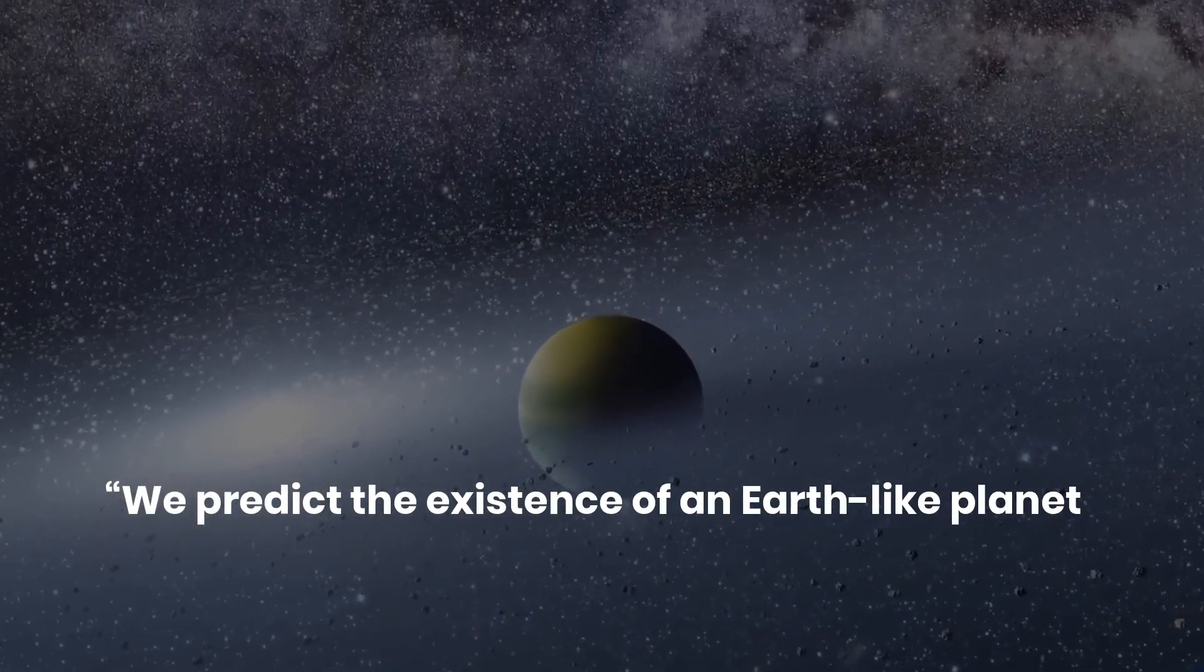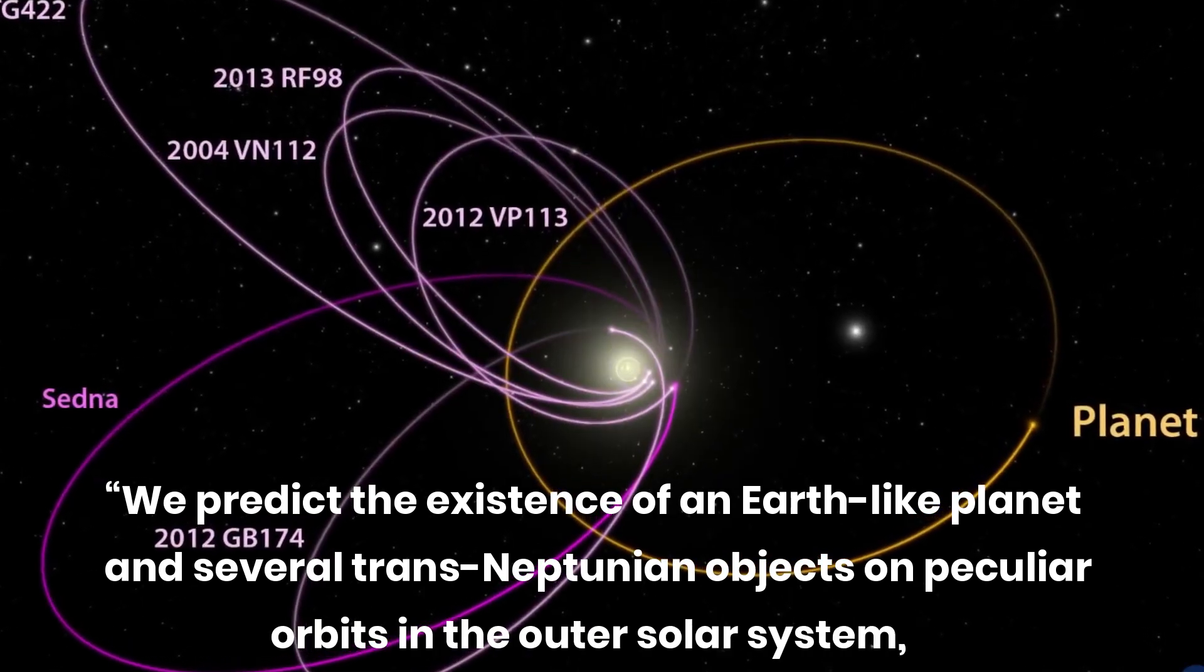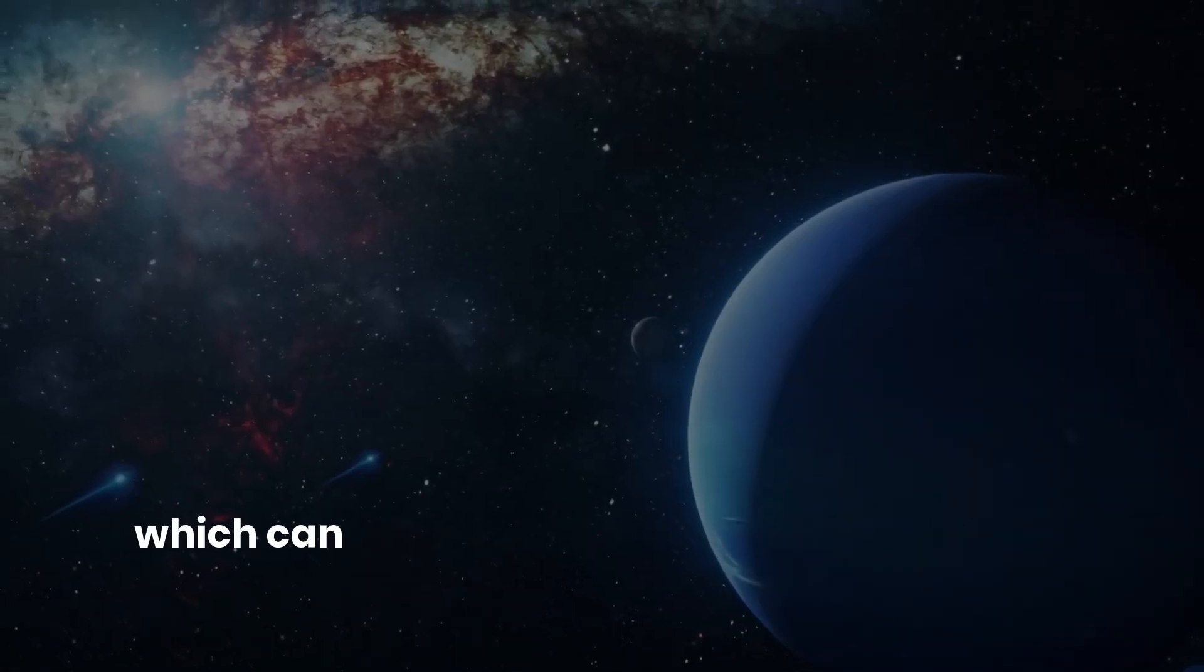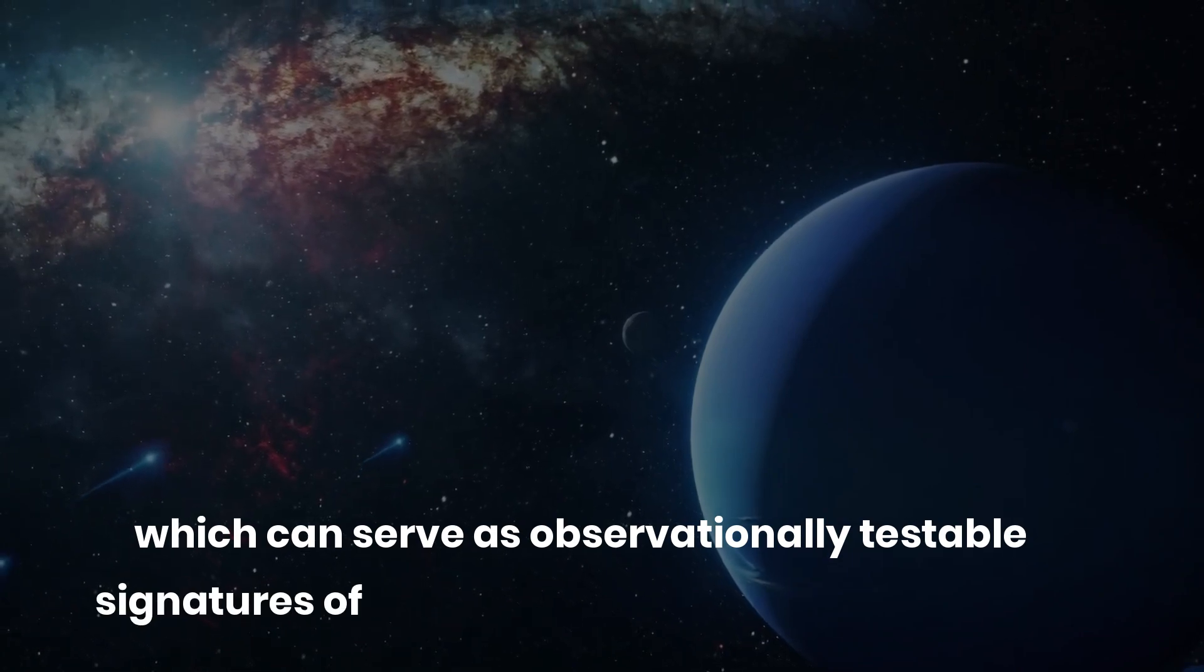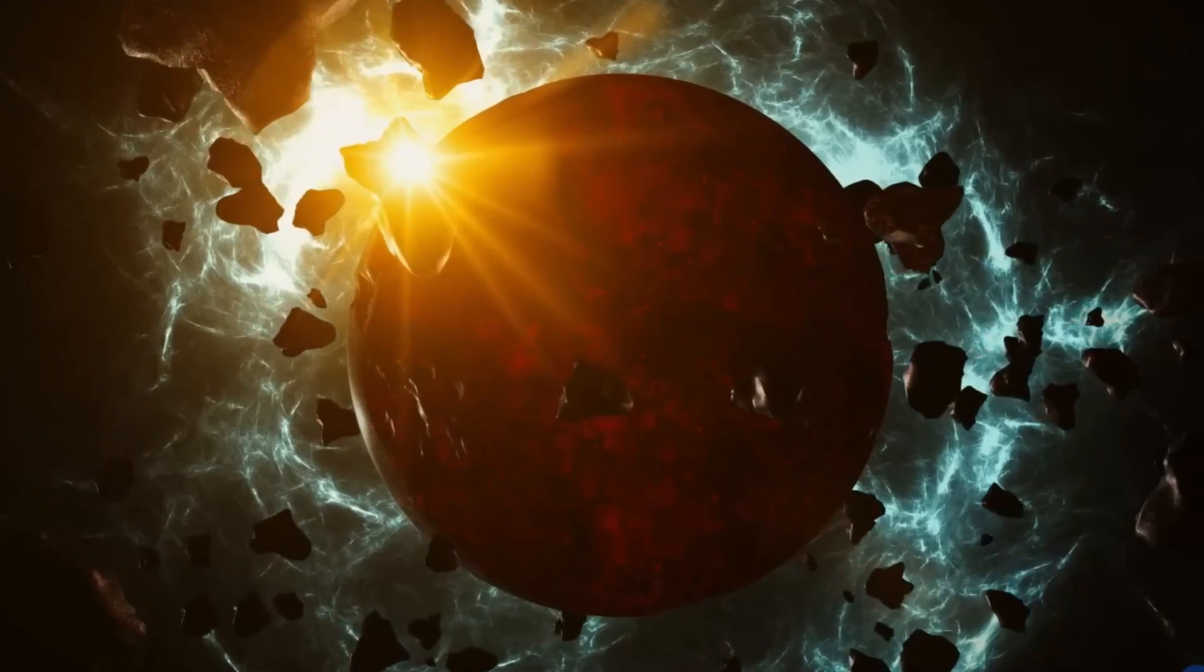We predict the existence of an Earth-like planet and several trans-Neptunian objects on peculiar orbits in the outer solar system, which can serve as observationally testable signatures of the putative planet's perturbations, Patrick Sophia Lycock and Takeshi Yido wrote in their research paper.